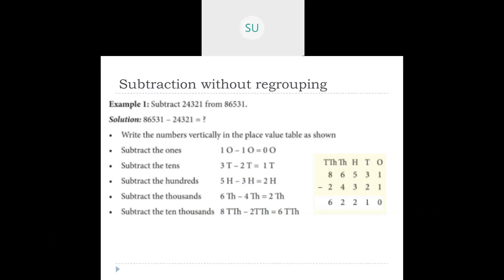In subtraction without regrouping, you write the two numbers vertically in their place value tables and start subtracting from the ones. For example: ones 1 minus 1 is 0, tens 3 minus 2 is 1, hundreds 5 minus 3 is 2, thousands 6 minus 4 is 2, ten thousands 8 minus 2 is 6. So the difference is 62,210.